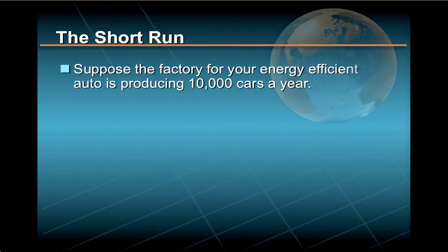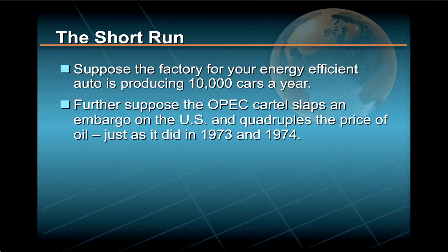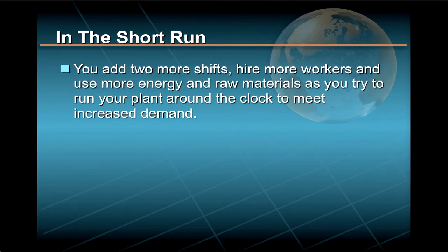To illustrate the short run, suppose the factory for your energy-efficient auto is already up and running and producing 10,000 cars a year. Further suppose that the Organization of Petroleum Exporting Countries, the OPEC Cartel, slaps an embargo on the U.S. and quadruples the price of oil, just as it did in 1973 and 1974. At this point, demand starts to increase dramatically for your cars as consumers seek to substitute your gas miser for their gas guzzlers. In the short run, you add two more shifts, hire more workers, and use more energy and raw materials as you try to run your plant around the clock to meet increased demand.